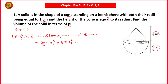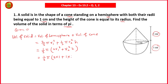Here (1/3)π is a common factor, so take it out. Inside the bracket it will be 2r₁³ plus r₂²h. Which is equal to (1/3)π into bracket: 2 into r₁ — the radius is 1, so 1³ = 1 — plus r₂² — r₂ is also 1 centimeter, so 1² = 1 — into h, which is also 1 centimeter.